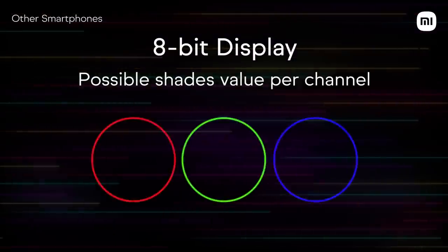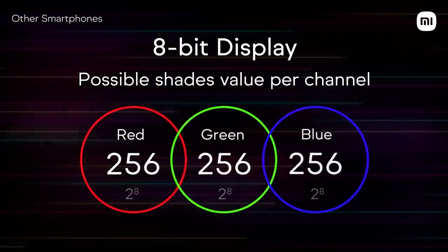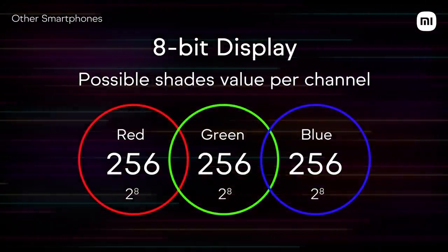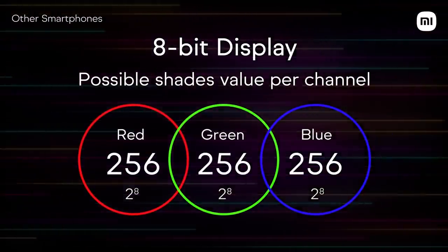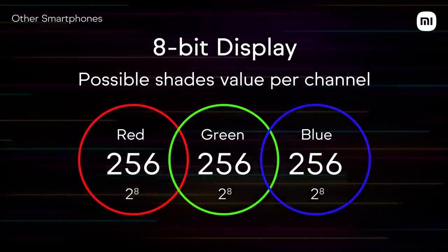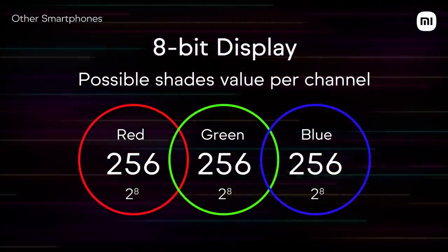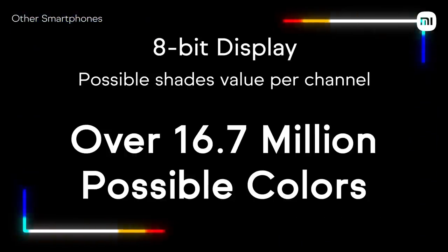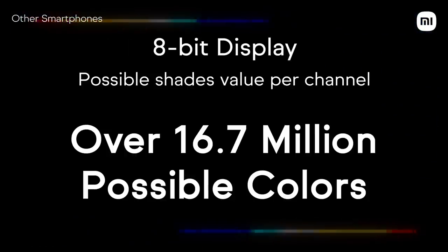Now that we have covered the basics, let's understand what an 8-bit display is. An 8-bit display basically renders only 256 shades of red, green and blue, which when multiplied together gives you a rough composition of roughly 16.7 million colors. This is good and we have been so used to this that the next information will completely blow you away.